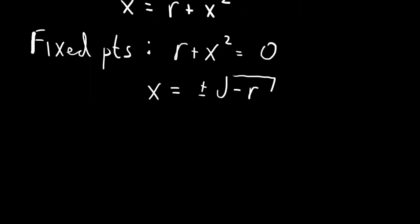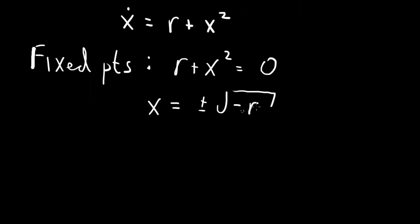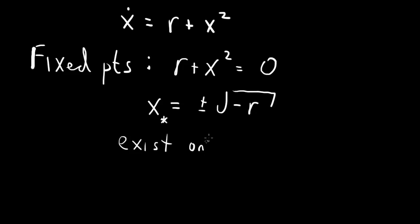So the fixed points exist — these are the two values of x-star. The fixed points will only exist when r is negative. When r becomes positive, you have the square root of a negative number, so the fixed points become imaginary. We're only looking for real fixed points, so fixed points exist only for r less than or equal to 0.